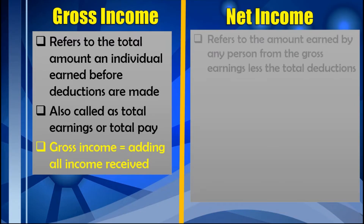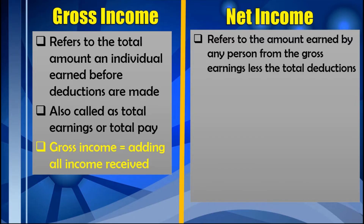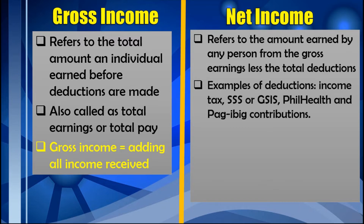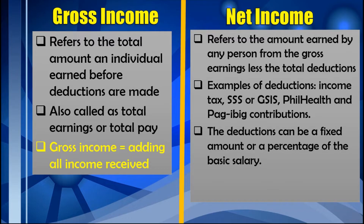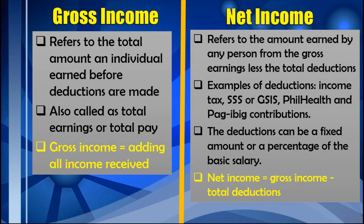On the other hand, when we say net income, it refers to the amount earned by any person from the gross earnings less the total deductions. Examples of deductions are income tax, SSS or GSIS, PhilHealth, and Pag-IBIG contributions. The deductions can be a fixed amount or a percentage of the basic salary. To compute for the net income, we deduct the total deductions from the gross income.